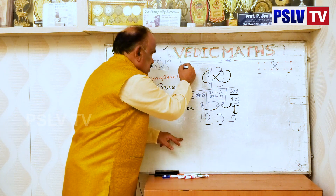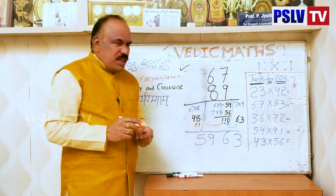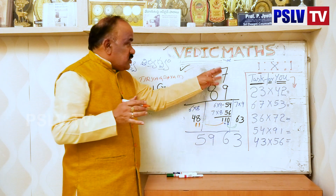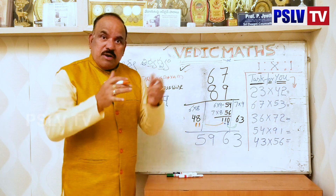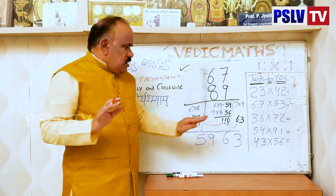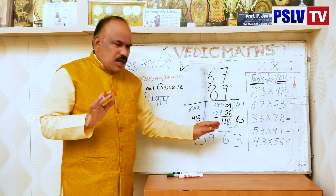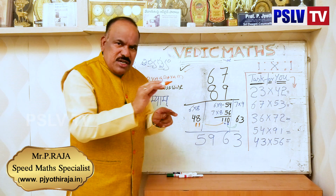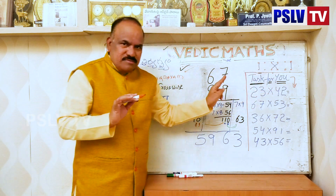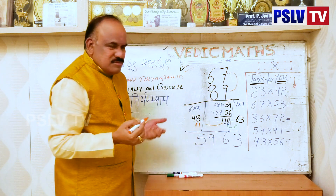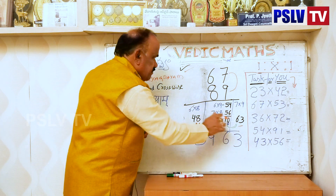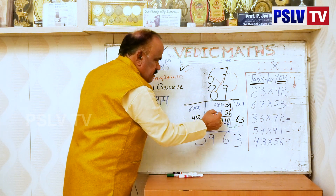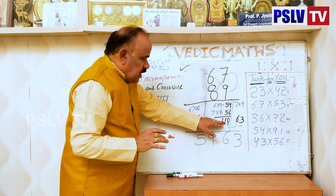Now let's do another example using the same vertical and crossways method — visualized as I star I. First, vertically: 7 into 9 is 63. I put that here with a separator. Now crossways: 6 into 9 is 54, and 8 into 7 is 56. The sum of these is 110.